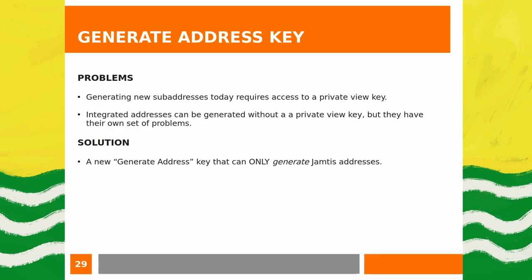The generate address key. Today, a merchant system that wants to generate new addresses and accept funds requires a server with access to the user's private view key, which can see all incoming received funds. Jamtis introduces a new generate address key that is purpose-built solely to generate Jamtis addresses — that's all it can do. A system housing only this key needs no private view key or any other additional key.